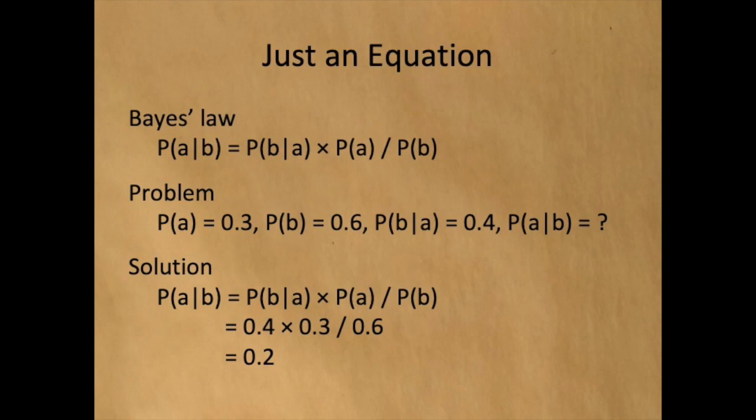Similarly, Bayes' law is just an equation. Bayes' law tells us the probability of A given B equals the probability of B given A times the probability of A divided by the probability of B. So if the probability of A equals 0.3 and the probability of B equals 0.6 and the probability of B given A equals 0.4, what's the probability of A given B? Start with Bayes' law, substitute in the numbers, simplify, and we get 0.2.